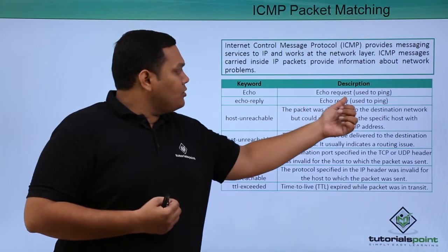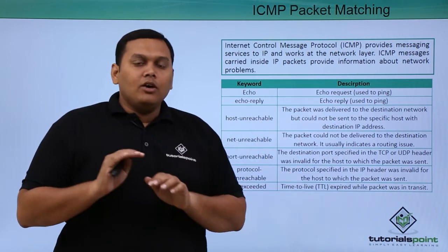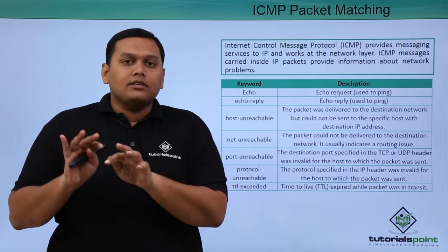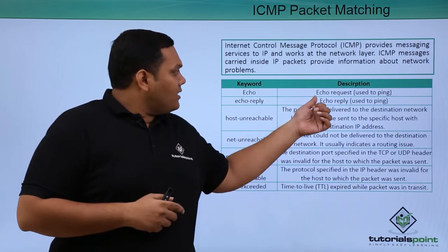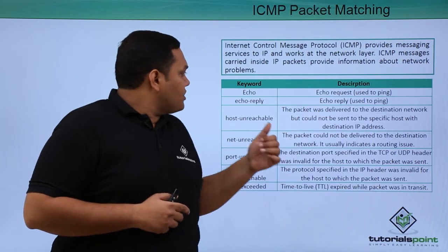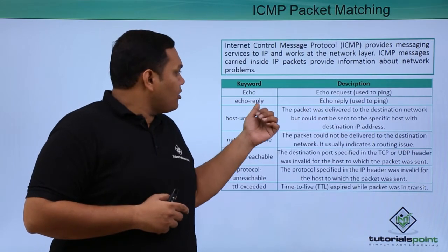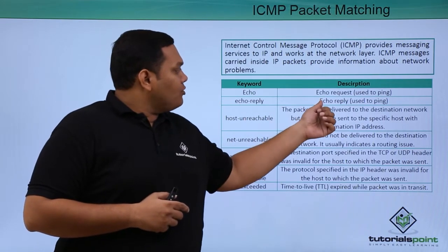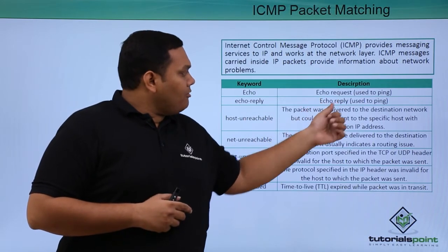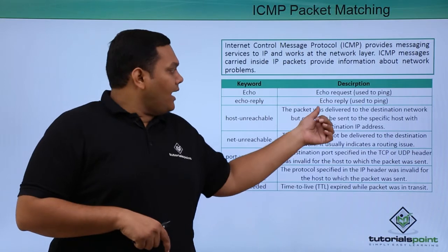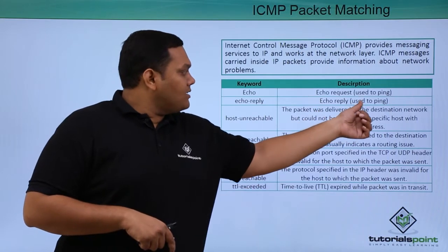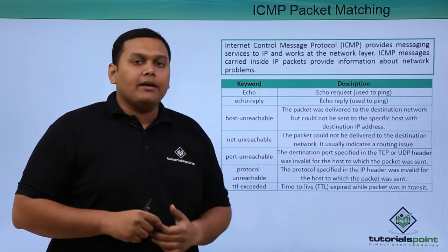Coming to the types — Echo is used to ping. When you ping a proper IP address, you get an echo request. Then there is echo reply, which is the reply received for the request. This is also used to ping.